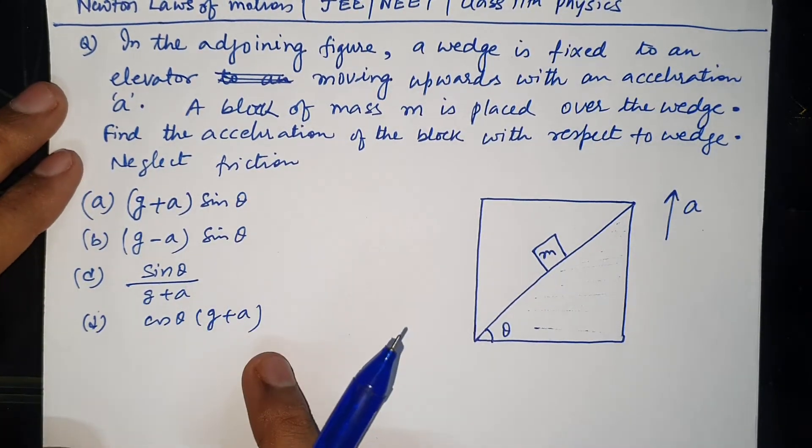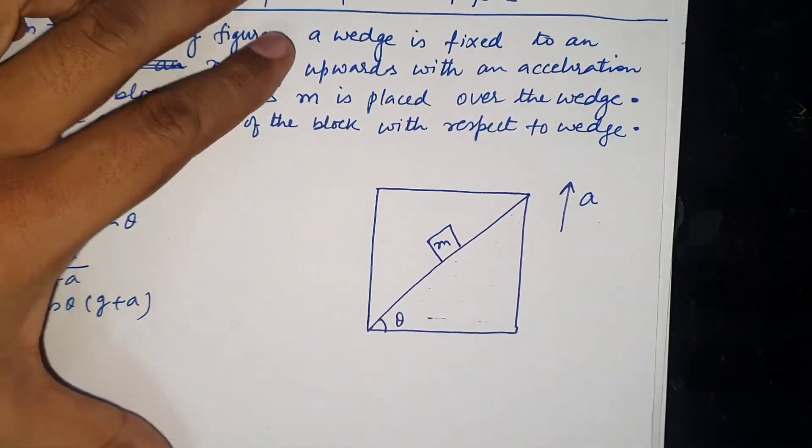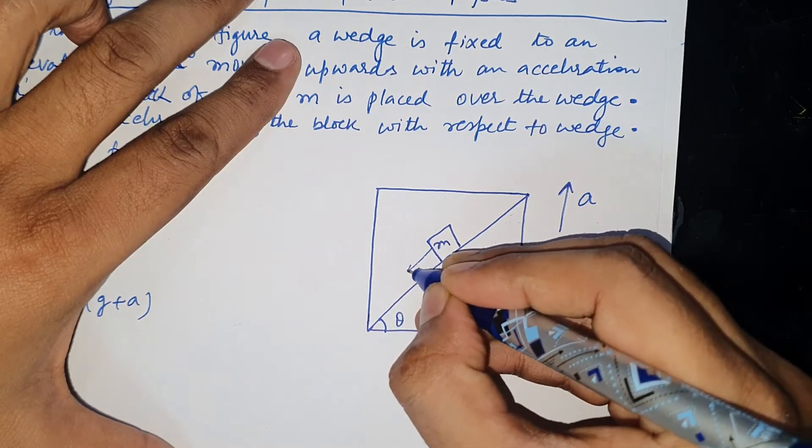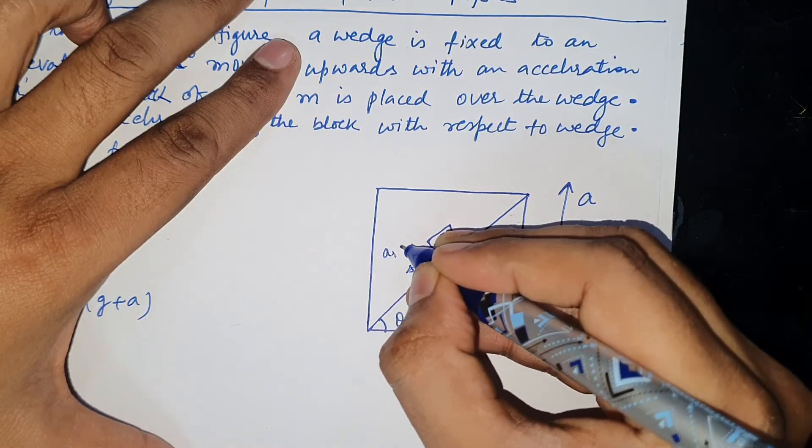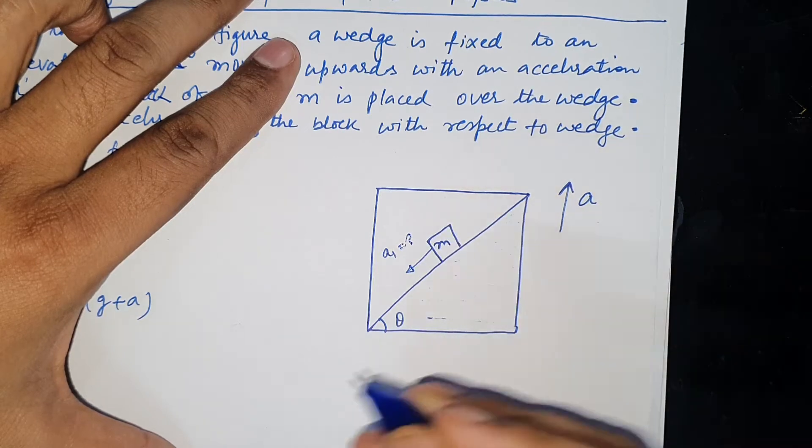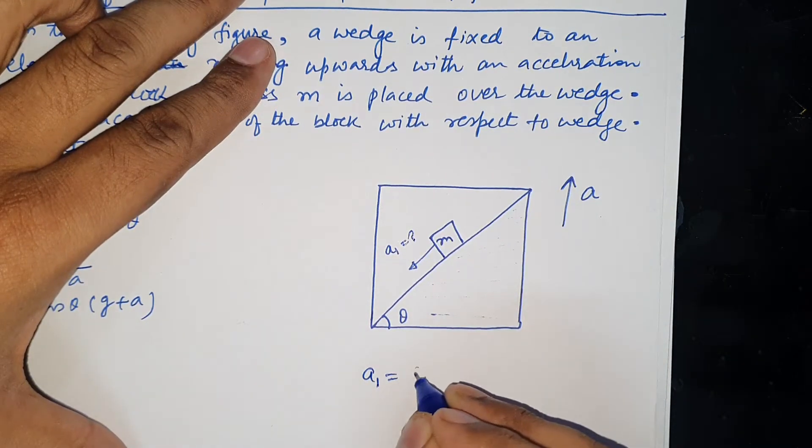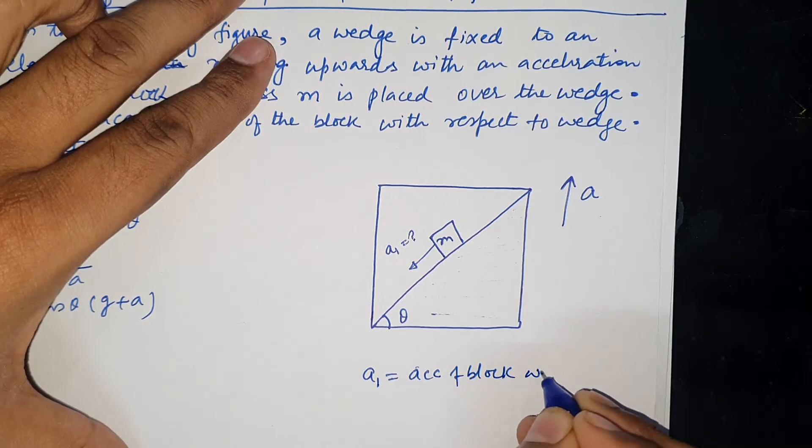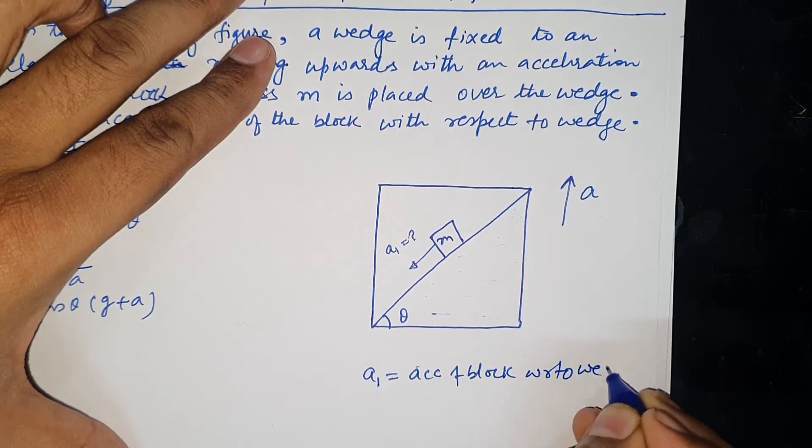Four choices. With respect to a low, acceleration is A1. This is the acceleration of the block with respect to wedge.